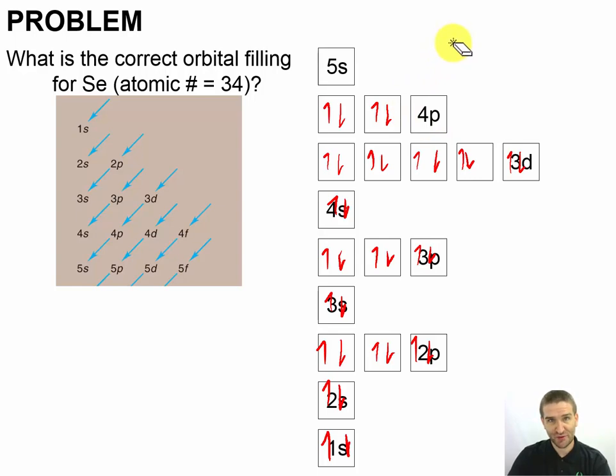How many unpaired electrons do you have? In this case, you'd say zero, which would be an incorrect answer. You should have two. So, that's how we're going to do our filling for selenium.